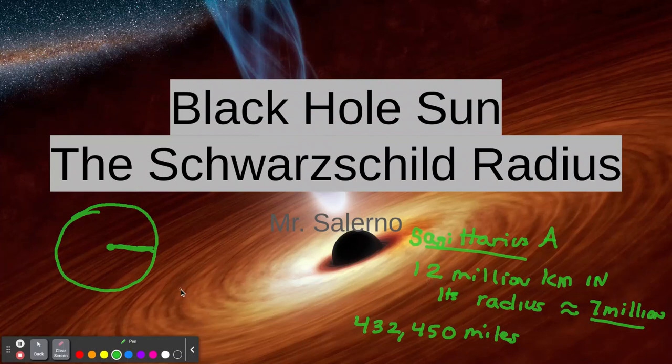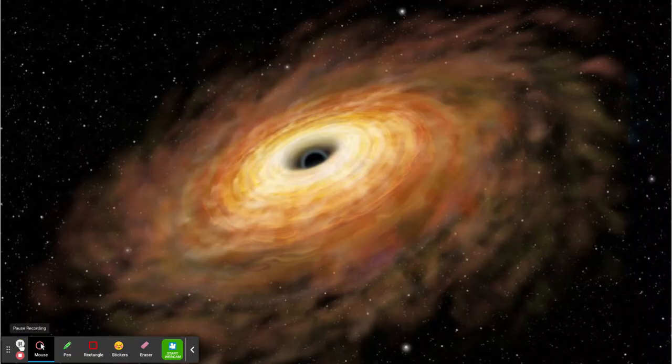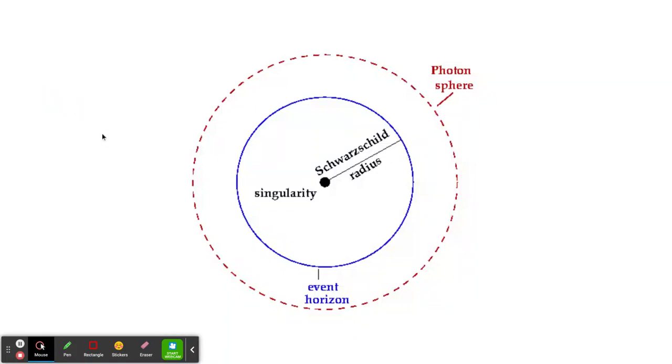Our sun will never become a black hole. It's not massive enough. But if it did collapse, what must its radius be? And that's what we'll find out with the Schwarzschild radius. And we'll also think about the Earth also. So let's clear this out. Let's get a clean page. And let's write the equation.